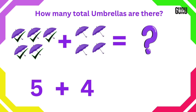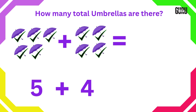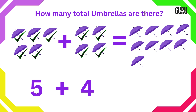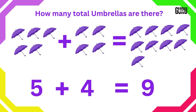Count after 5: 6, 7, 8, 9. So total 9 umbrellas. Therefore, 5 add 4 is 9.